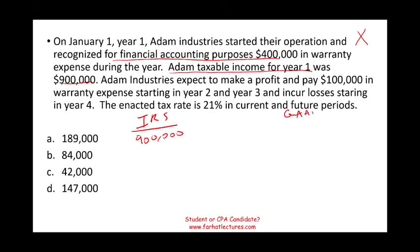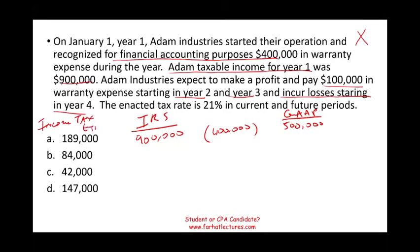For GAAP, the difference between IRS and GAAP is $400,000. So for GAAP, you took an additional $400,000 deduction; therefore your GAAP net income — your financial statement net income — is $500,000, because IRS income is $900,000 and you have a difference of $400,000. Adam Industries expects to make a profit and pay $100,000 in warranty expense starting in year two and year three, and incur losses starting year four. The enacted tax rate is 21% in current and future periods. The question is: compute income tax expense for year one.